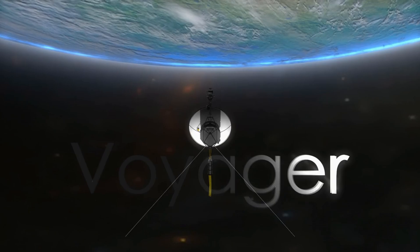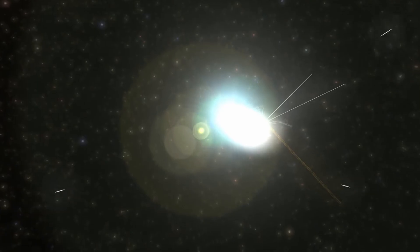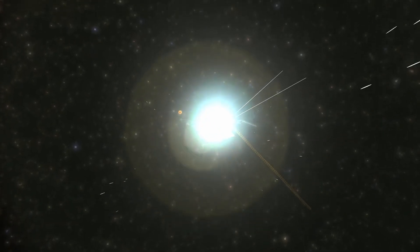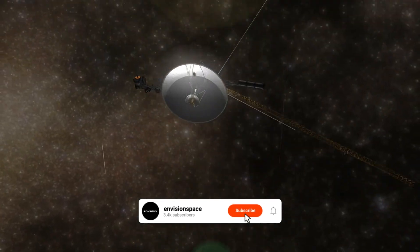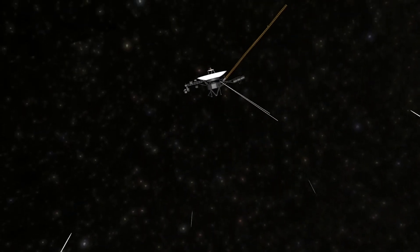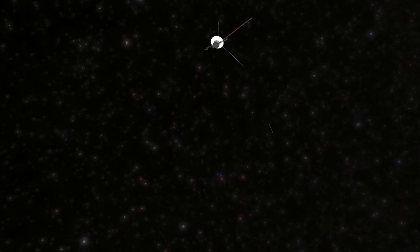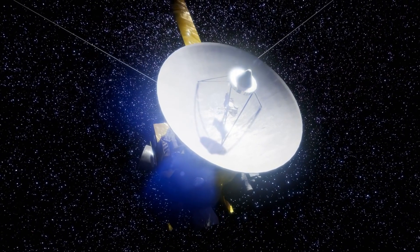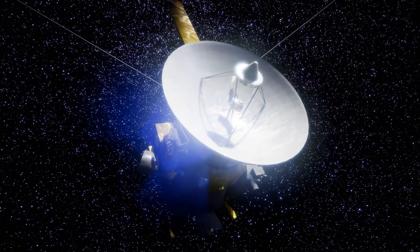NASA engineers working on the fix faced two serious challenges. First, the spacecraft was built more than five decades ago by people who have long since retired. So, the present team needed to go very deep into the old documents to see how the probe and its computers worked.